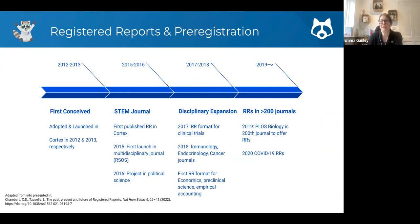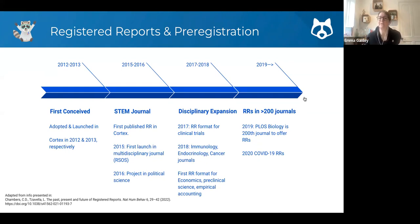Another shift worth noting is registered reports — many of you may not have heard about them, but this is an interesting shift in the way research is being performed, acknowledged, and credited, with the value of the methods and protocols themselves being the key component. They were first conceived in 2012 but by 2019 were already implemented in over 200 journals, including high-profile ones like PLOS Biology covering many research disciplines.